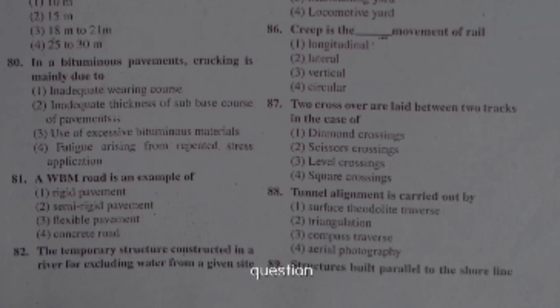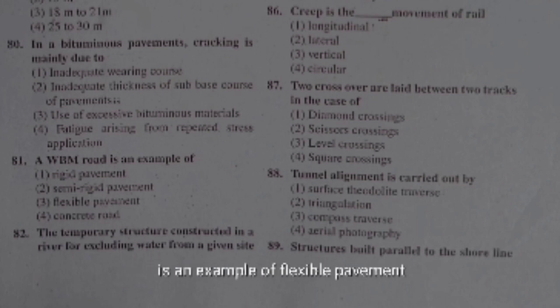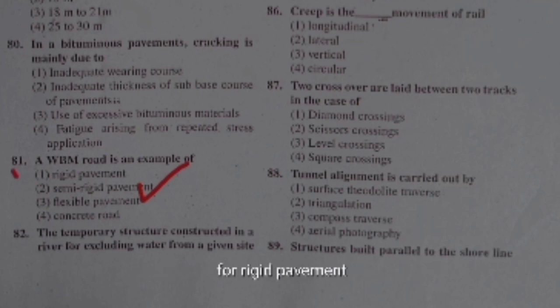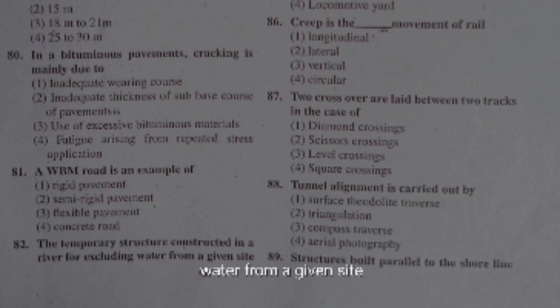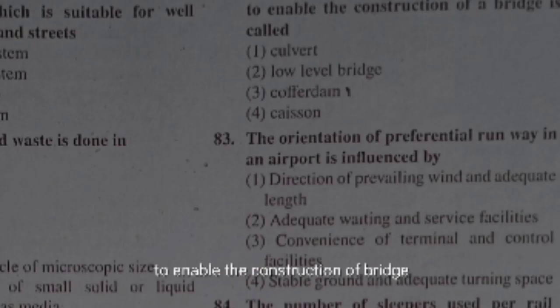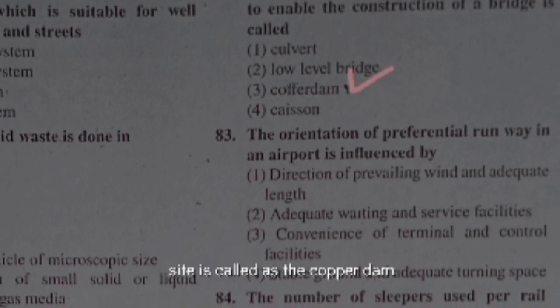In a bituminous pavement, cracking is mainly due to fatigue arising from repeated stress application. A waterborne macadam road is an example of flexible pavement, and a cement concrete road is an example of rigid pavement. The temporary structure constructed in a river to exclude water from a given site to enable bridge construction is called a cofferdam.